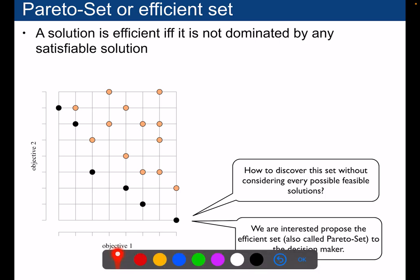What we want to discover in our problem is what we call the Pareto set or the efficient set. These are the set of solutions that are not dominated by any feasible solution. At the end of the optimization problem, we want to discover this set of non-dominated points. The question is how to discover this set without considering every possible feasible solution. This Pareto set is what we want to propose to the decision maker, and then it's up to the decision maker to make their own choice once we show them the Pareto set of solutions.